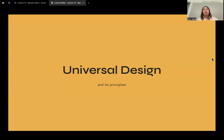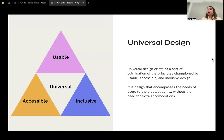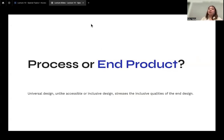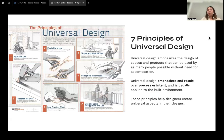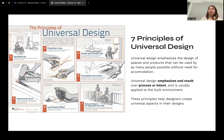Universal design is a culmination of the principles of usability, accessibility, and inclusivity. It's design that encompasses the needs of users to the greatest ability without requiring additional accommodations. Rather than focusing on intent during the process, it cares about the end product and stresses inclusive qualities in the final design. It emphasizes design of spaces and products usable by as many people as possible — one design that fits everyone — and is usually applied to an already built environment.